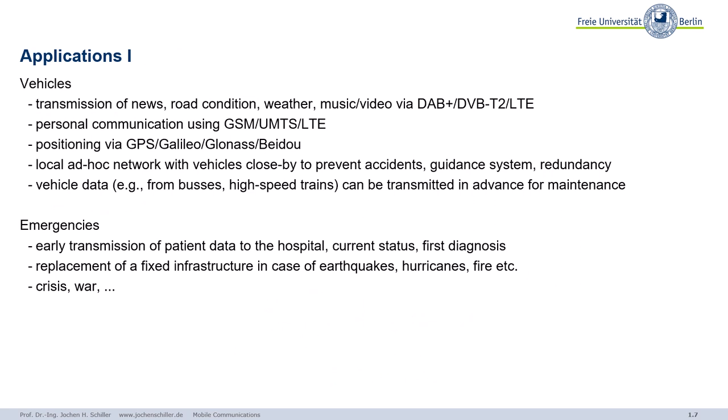Let's briefly go through some applications just to give you an idea. First, vehicles — it's quite obvious you need wireless connections there because you cannot have a wire with your car. If you want to transmit music, videos for the kids, news, road conditions, there are many systems available: broadcast systems for radio and TV, and for bi-directional communications, LTE.